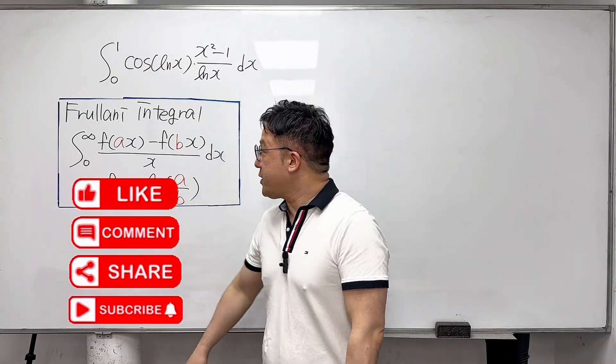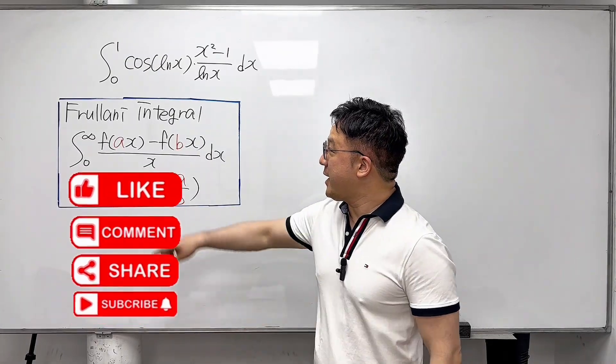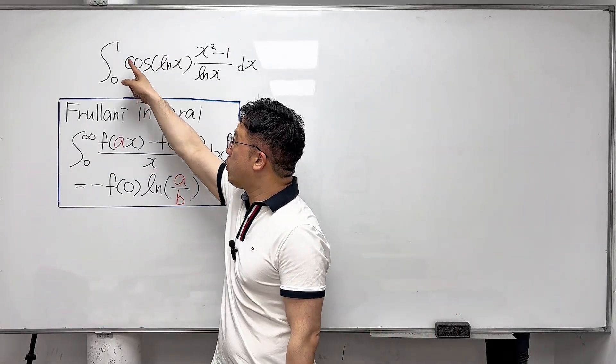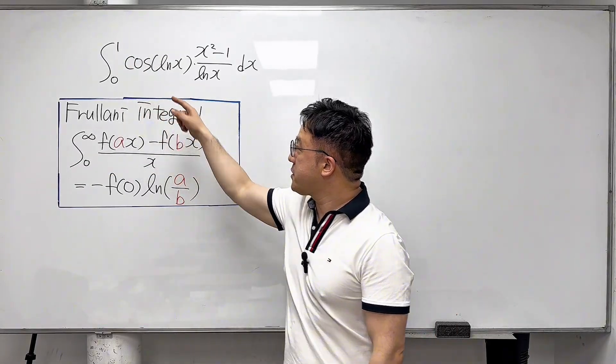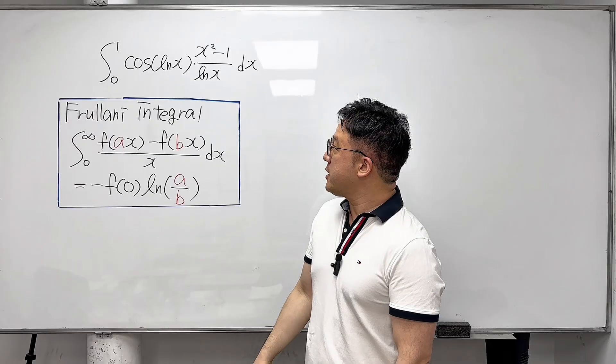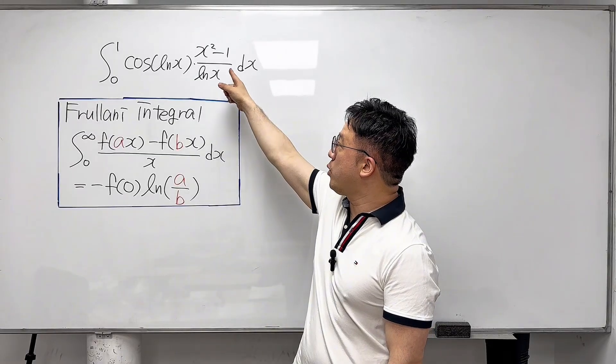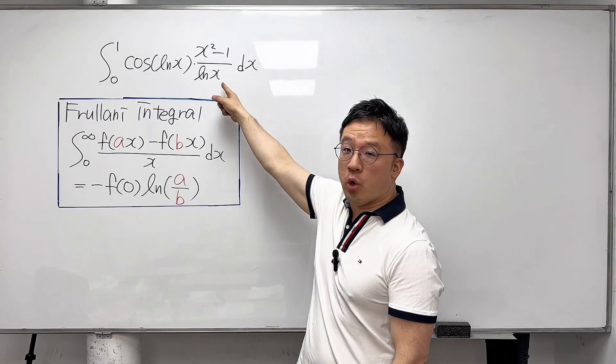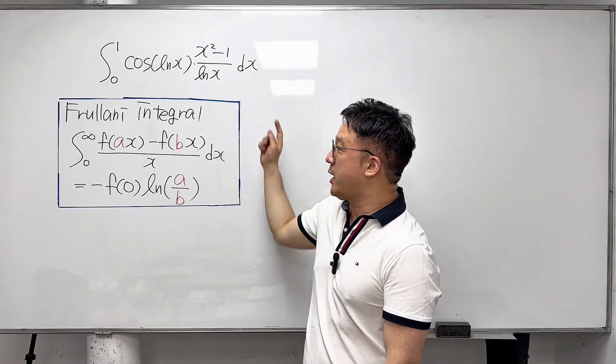Okay, here's the question. Evaluate this integral from 0 to 1: cosine of ln(x) times (x² minus 1) over ln(x), dx.